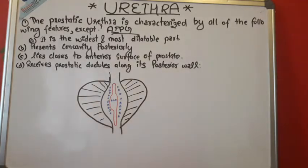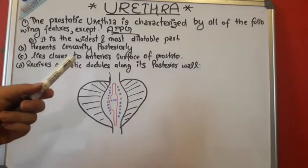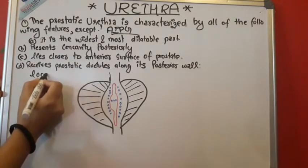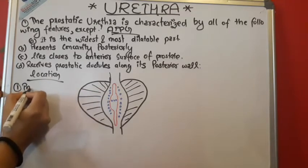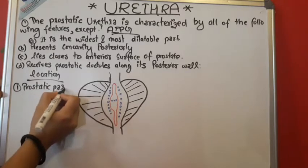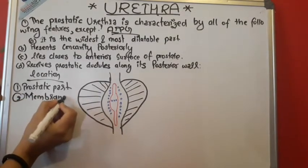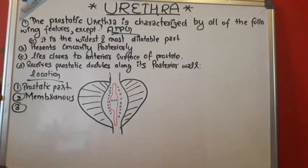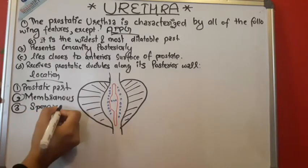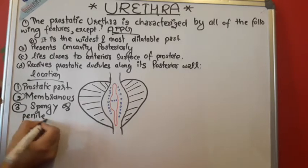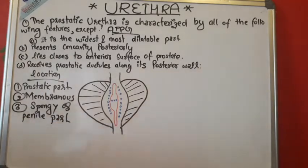When talking about urethra, we need to understand its basic structure. The urethra is generally divided into three main parts based on location: the first is the prostatic part, the second is the membranous part, and the third is the spongy or penile part.